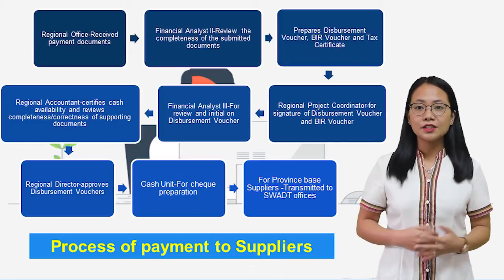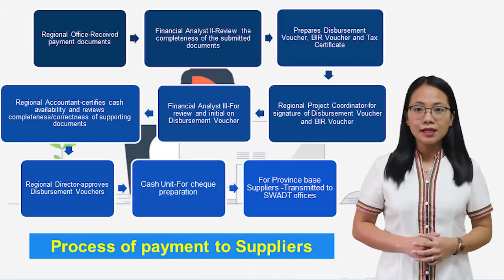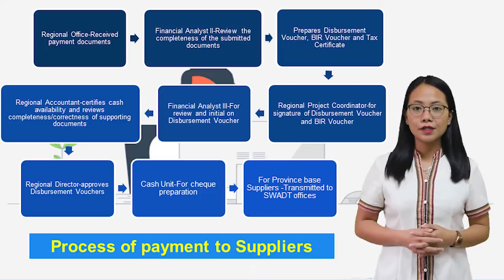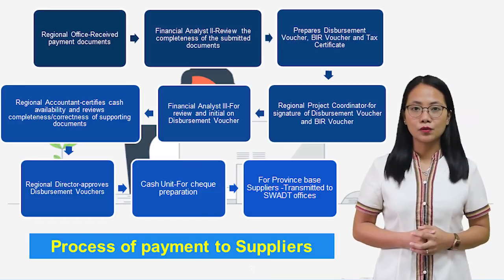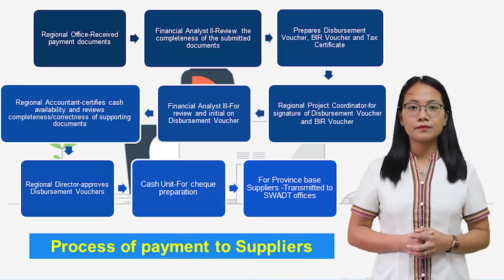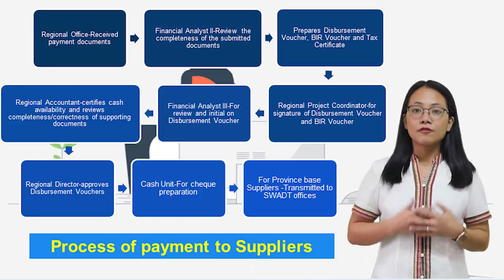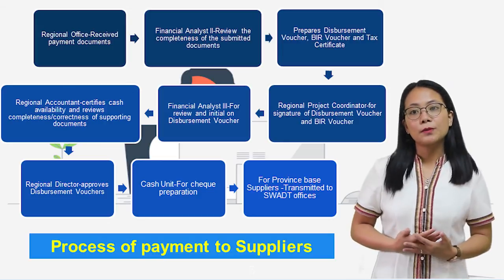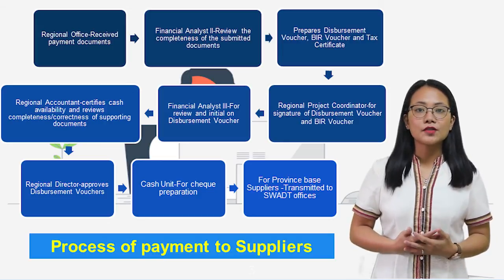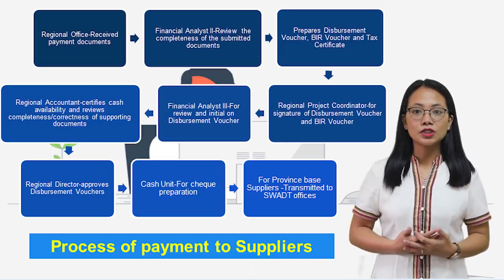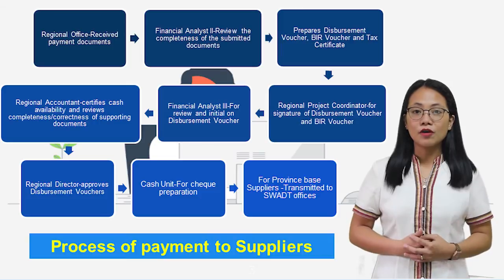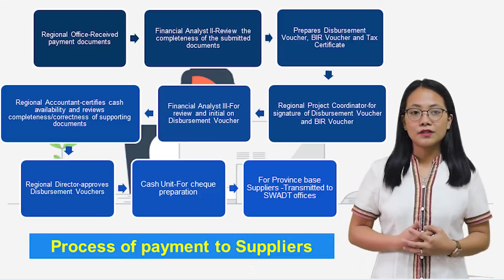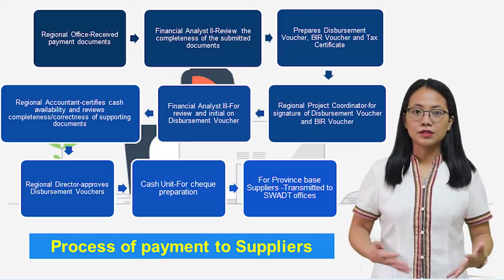Once signed and certified, these documents will be forwarded to the regional director for approval. Finally, the cash unit will prepare the check and transmit it to social welfare development team offices to submit it to province-based suppliers.